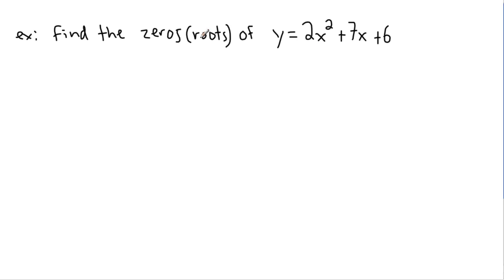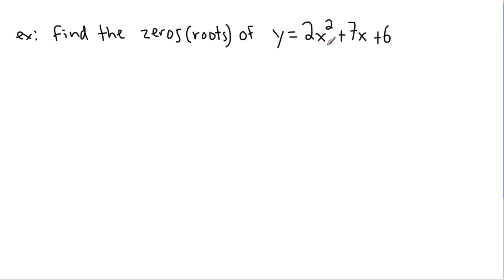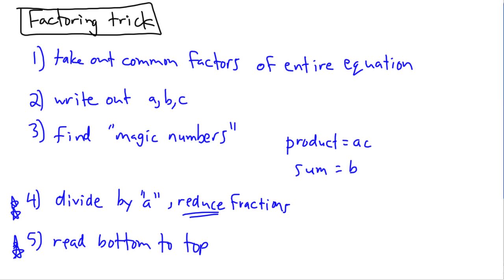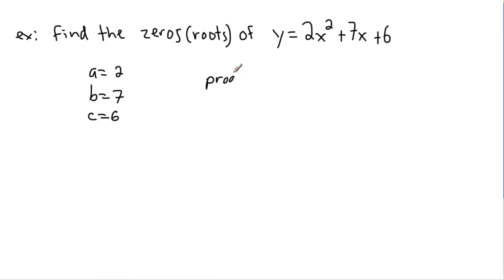Let's do a different example — one that looks tougher. Find the zeros or roots of 2x² + 7x + 6. First step: can I take out common factors? No, there's nothing common. So the next step is to write down a, b, and c: a = 2, b = 7, c = 6. Now I need to find numbers whose product is ac = 2 × 6 = 12, and whose sum is b = 7.